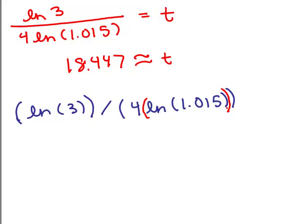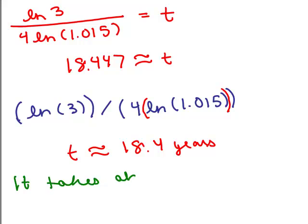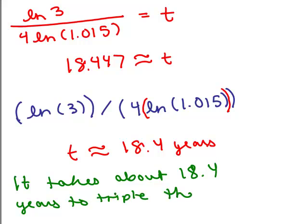This was kind of a low interest rate, 6%, so it does take a long time. So we get t, and I said to round to the nearest tenth of a year, so it's about 18.4 years. It looks like it's going to take about 18.4 years to triple the investment.